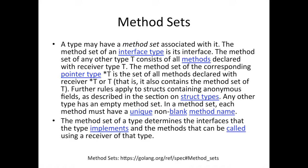For any other type T — besides an interface — the method set consists of all methods declared with receiver type T. The only time we have a method is when it has a receiver; a function with no receiver is not a method. The method set of the corresponding pointer type star T is the set of all methods declared with receiver star T, or in addition to that, any method defined for T.